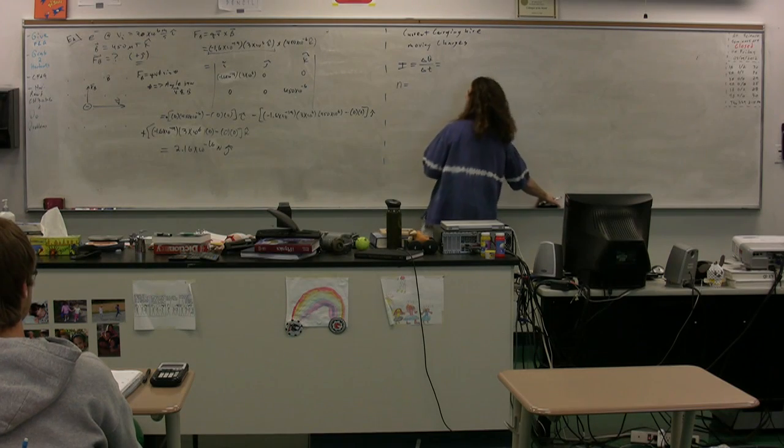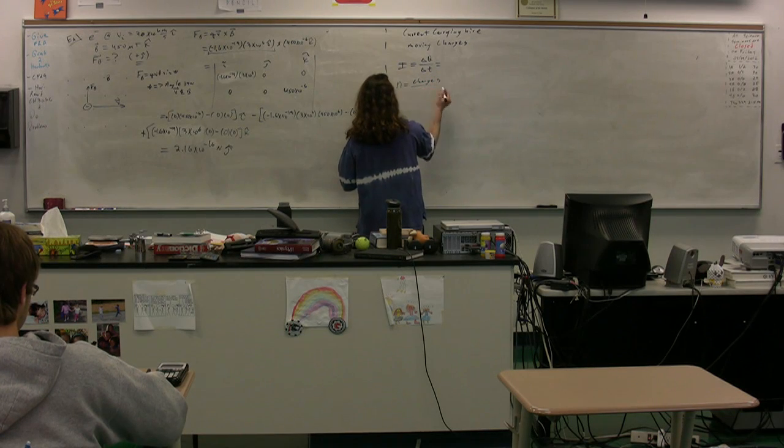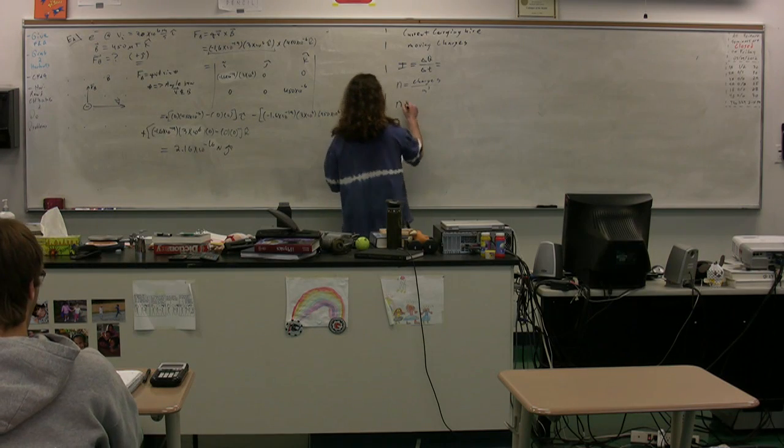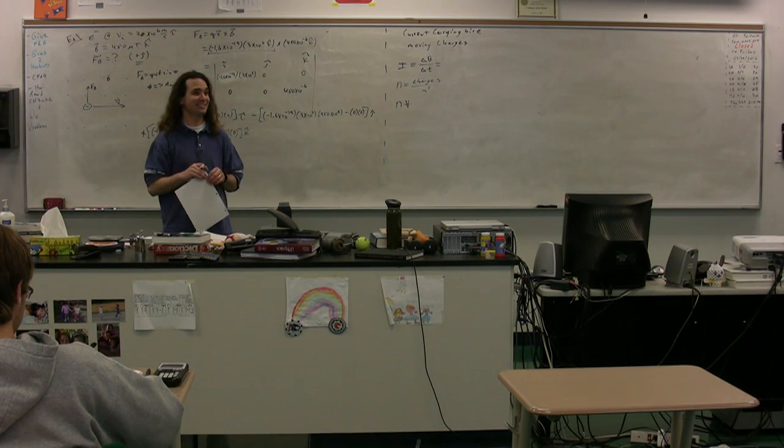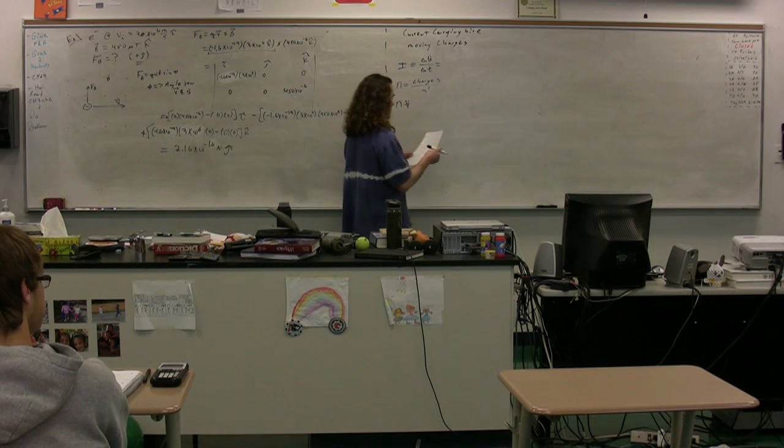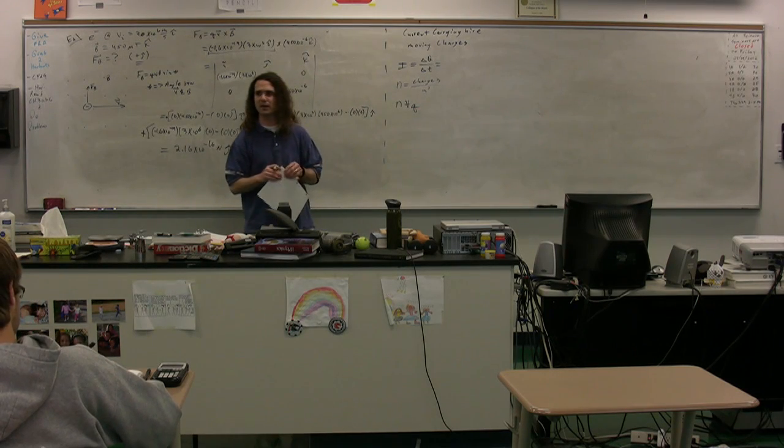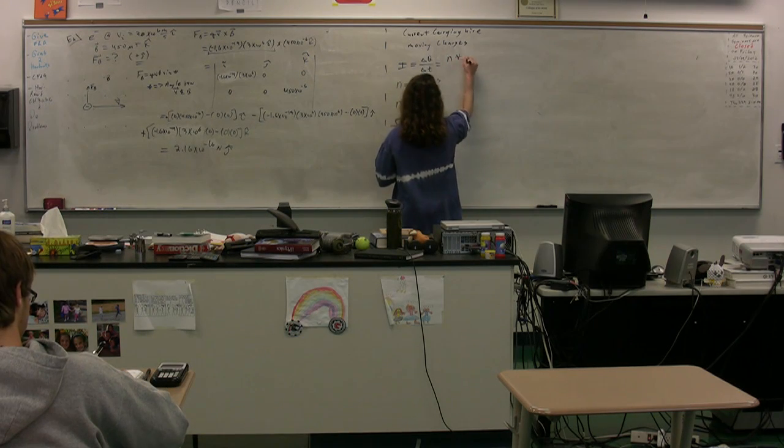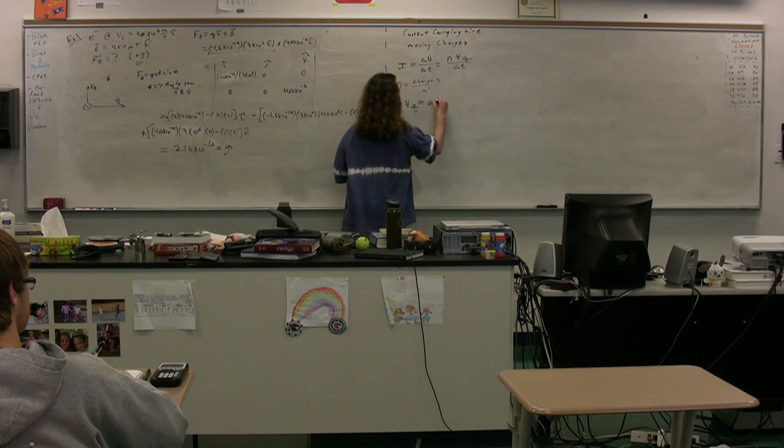So, if we take the charge carrier density and we multiply it by the volume, we get what? Class? Number of charges. The charge. The number of charges. If we multiply that by q, we get what? The charge. So this is equal to charge carrier density times the volume times the charge divided by delta t. Right? Because this is just the charge.